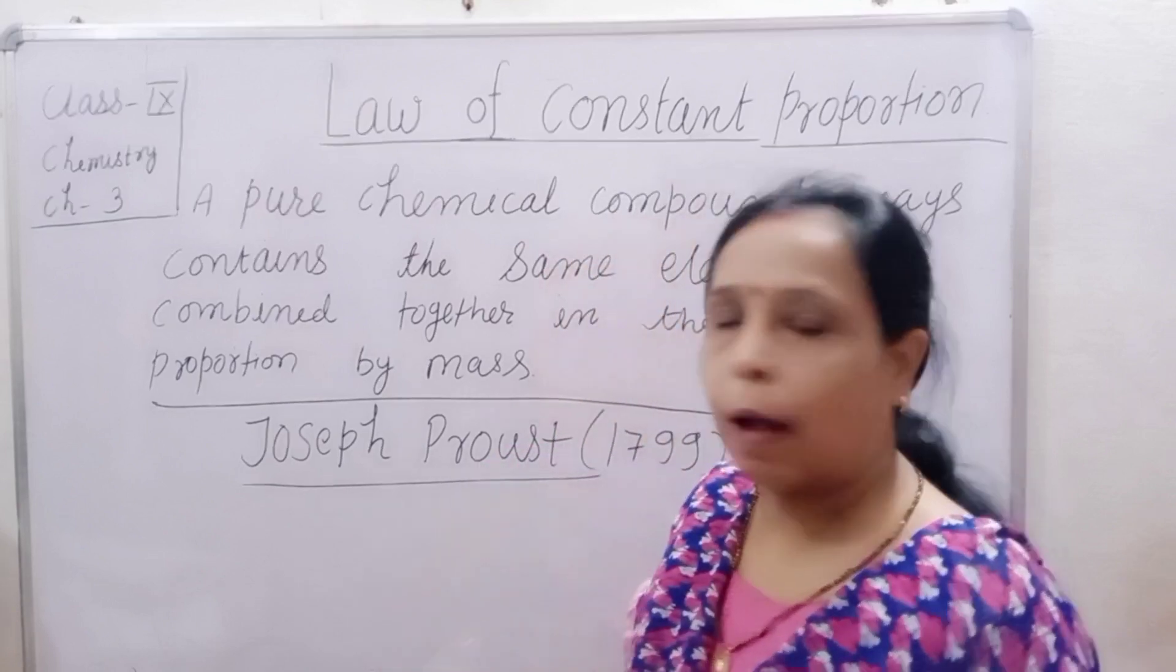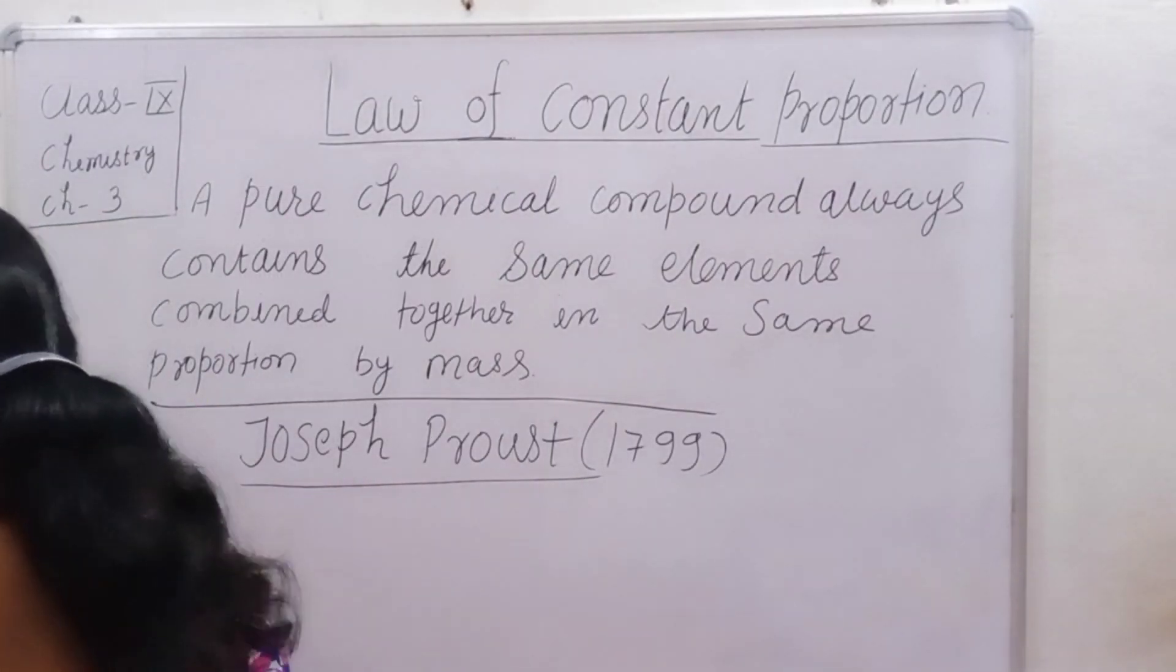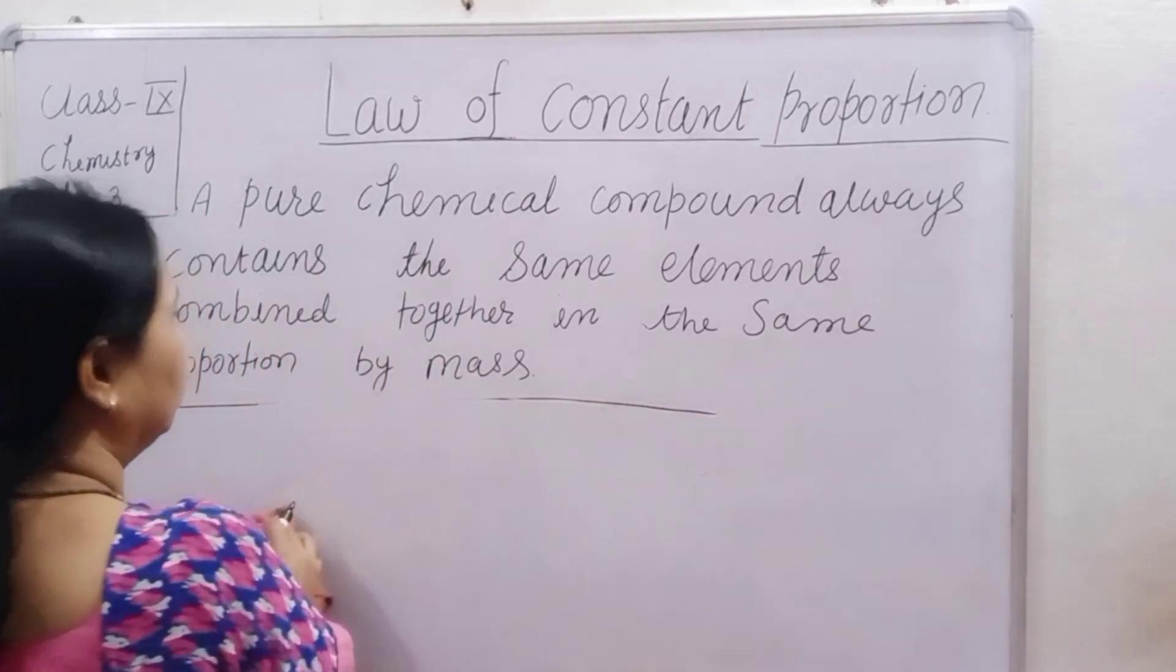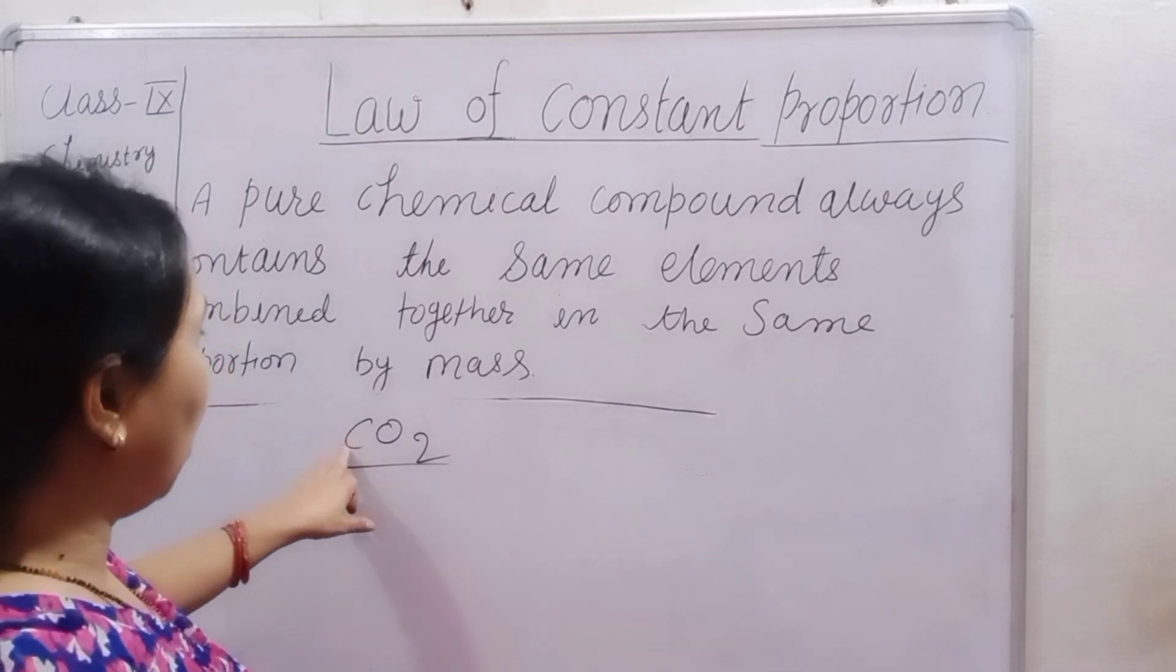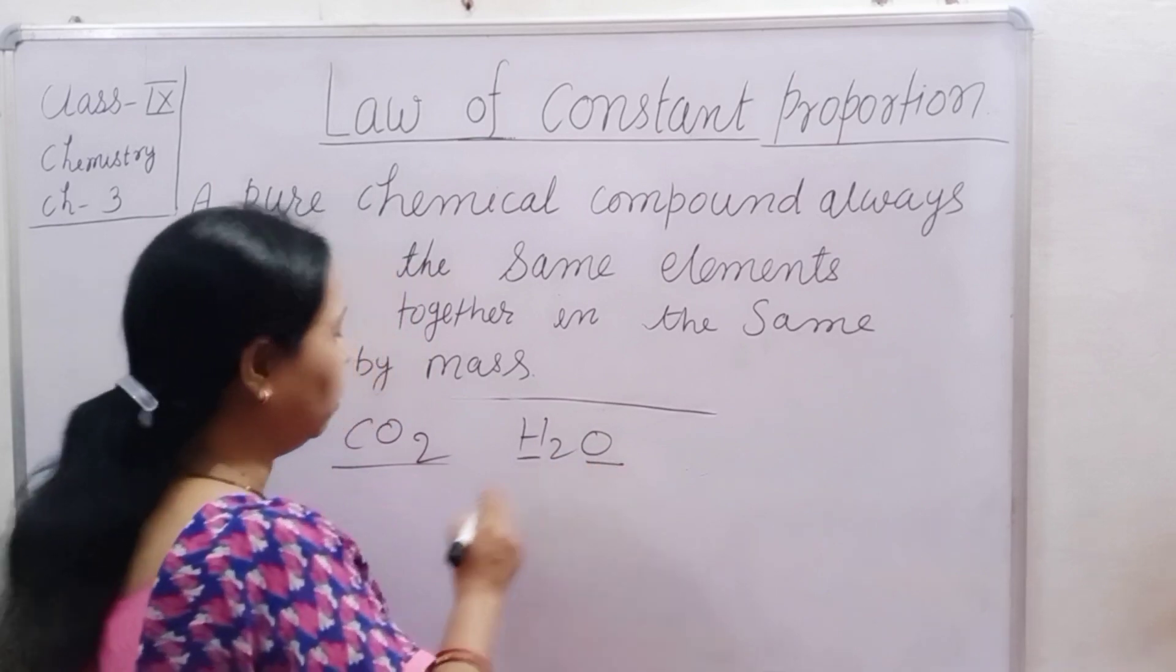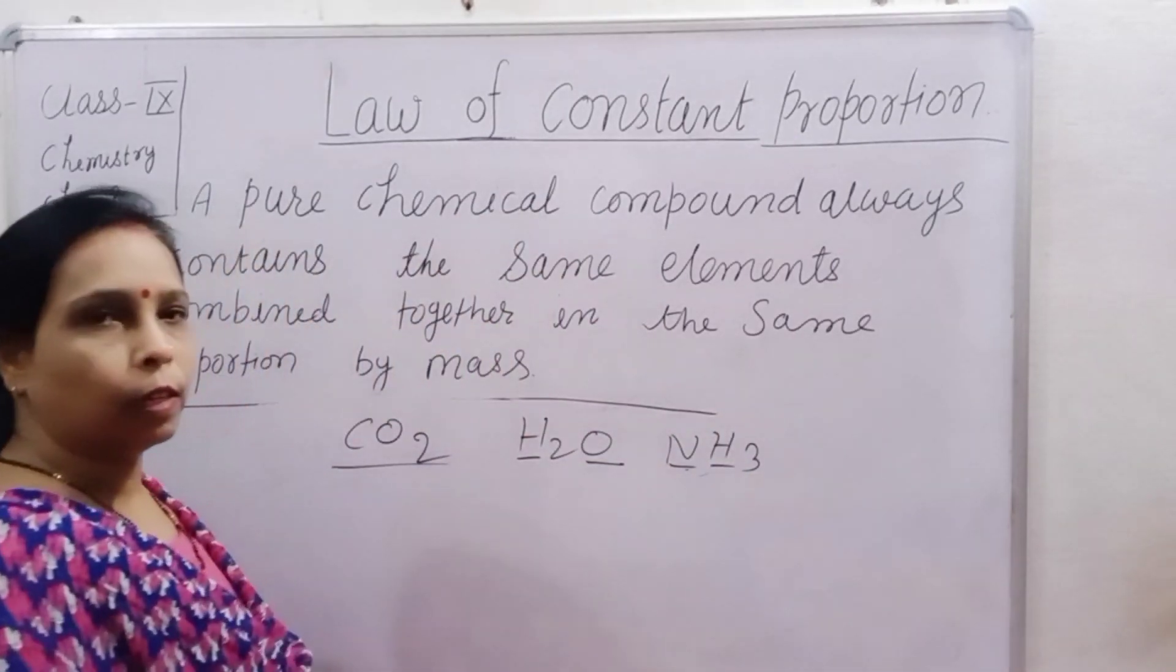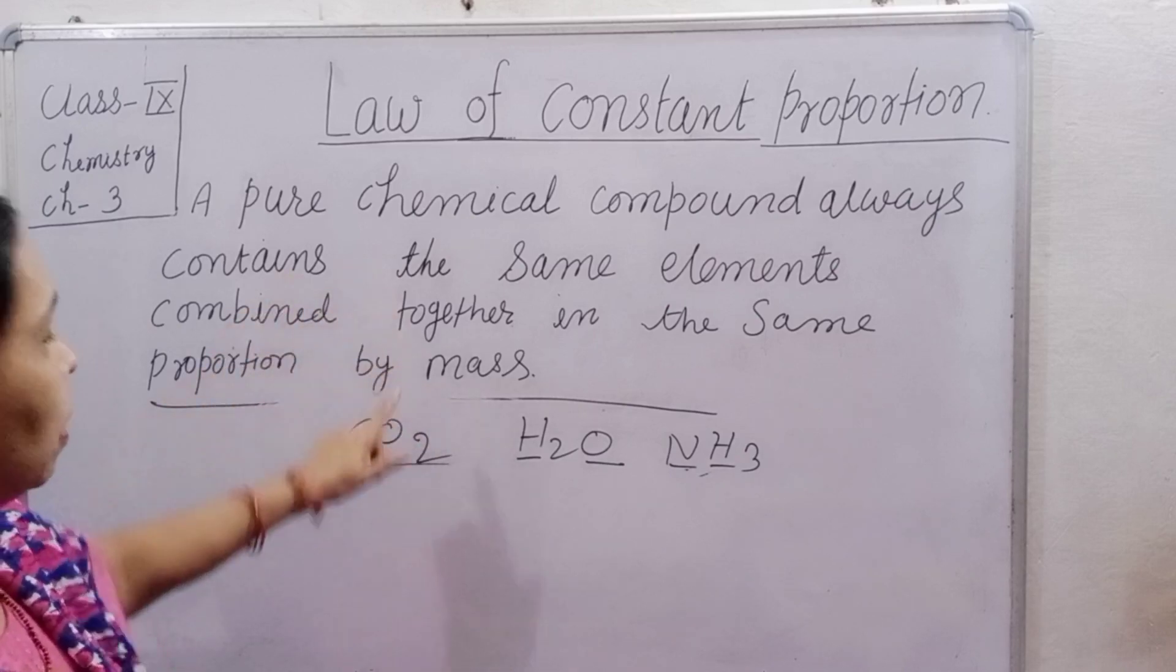As per carbon dioxide, carbon dioxide always contains carbon and oxygen. Water always contains hydrogen and oxygen. NH3, ammonia, always contains nitrogen and hydrogen. It means chemical compound always contains the same element.